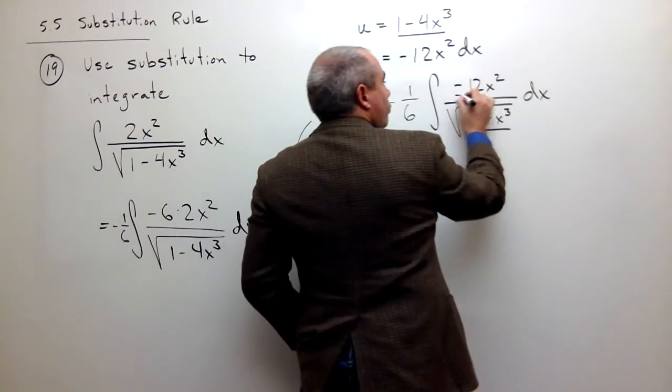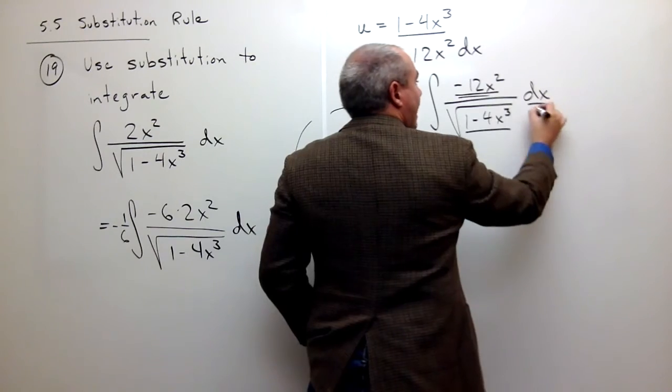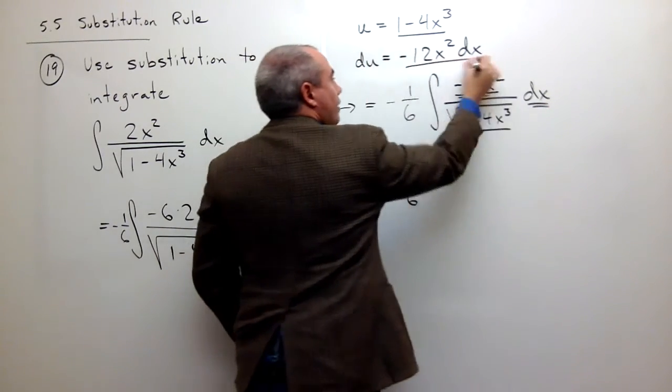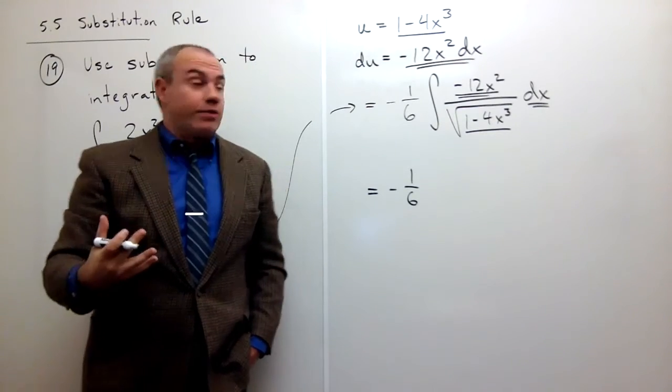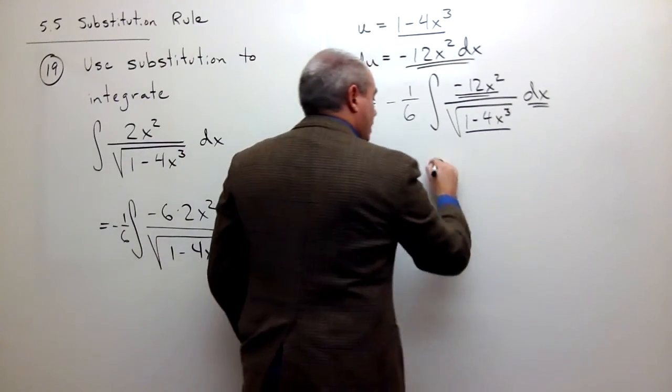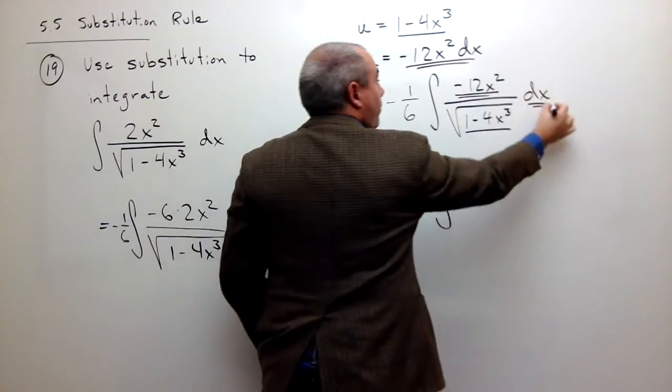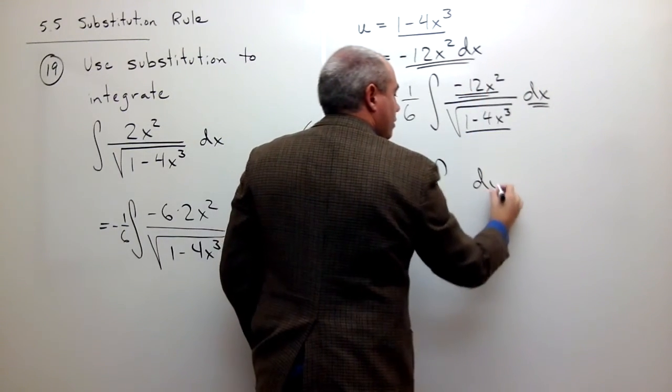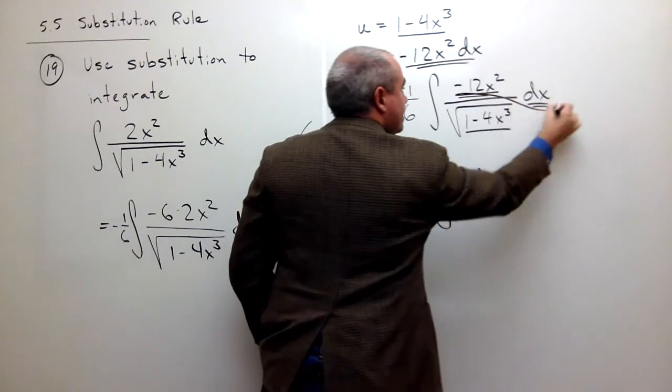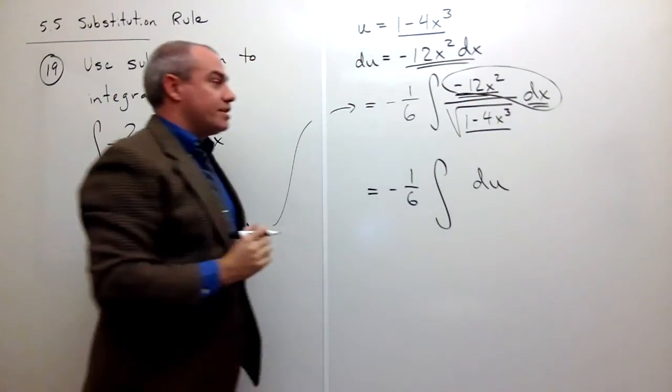Negative 12x squared dx, negative 12x squared dx, that's all going to become du. So if I rewrite this, this is the integral of, on top all of that stuff just becomes du. So this stuff all turns into du.